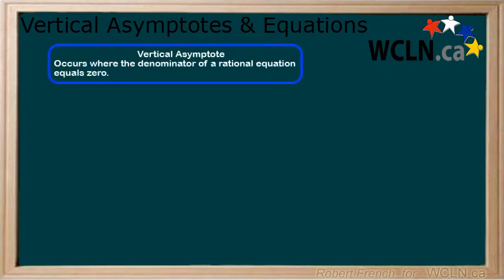A vertical asymptote is created when the denominator of a rational equation equals 0.